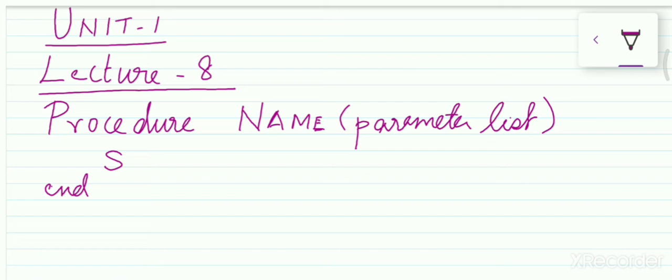As we all know, a procedure is a block of statements which is named and can be reused again and again in your code. In this algorithm description language, to define a procedure we write the keyword procedure followed by name. The name is the name of the procedure and this is the list of parameters that we need to pass.